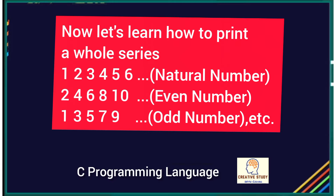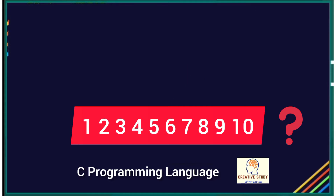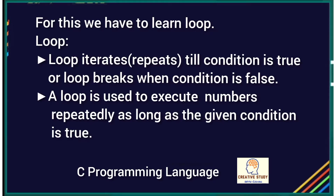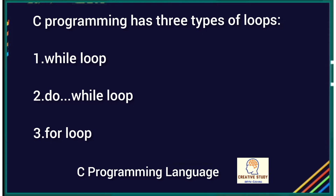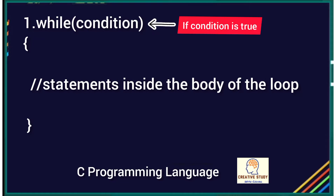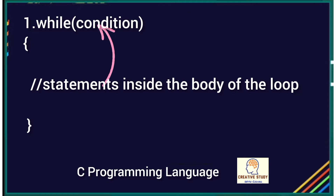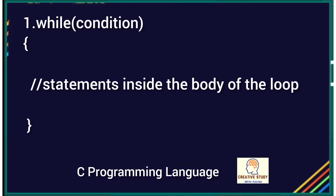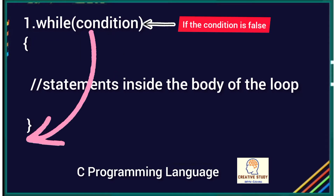To print such series, we need to learn loops. A loop iterates or repeats till the condition is true, and breaks when the condition is false. A loop is used to execute or print numbers repeatedly as long as the given condition is true. C programming has three types of loops: while, do-while, and for loop. The while loop evaluates the condition inside parentheses — if true, statements inside the body execute, then the condition is evaluated again. This process goes on until the condition is false, at which point the loop terminates.